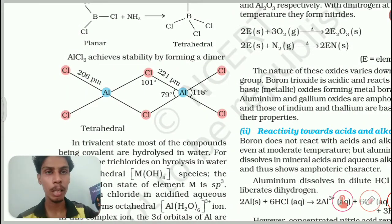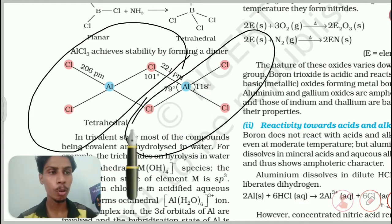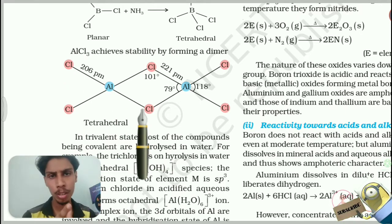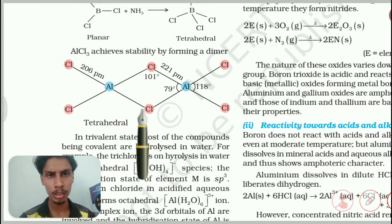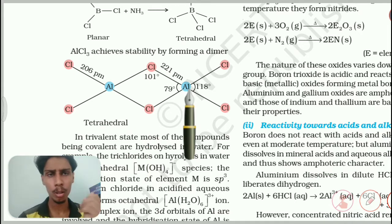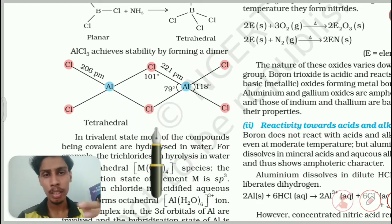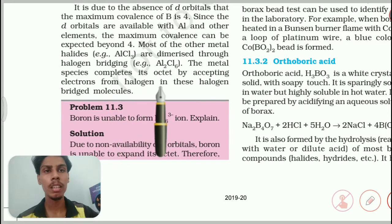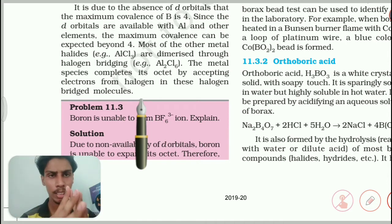In the Al₂Cl₆ dimer, each aluminum is surrounded by 4 bonds — each bond has 2 electrons — so each aluminum is surrounded by 8 electrons, satisfying the octet rule. The two aluminum atoms are bridged by halogen atoms, which is why it is called halogen-bridged. The metal species completes its octet by accepting electrons from the halogen in these halogen-bridged molecules. That is why it forms the bridge-type bond. I hope you understood up to this point — if you have any doubt or query, you can comment in the comment section or join our Telegram group.